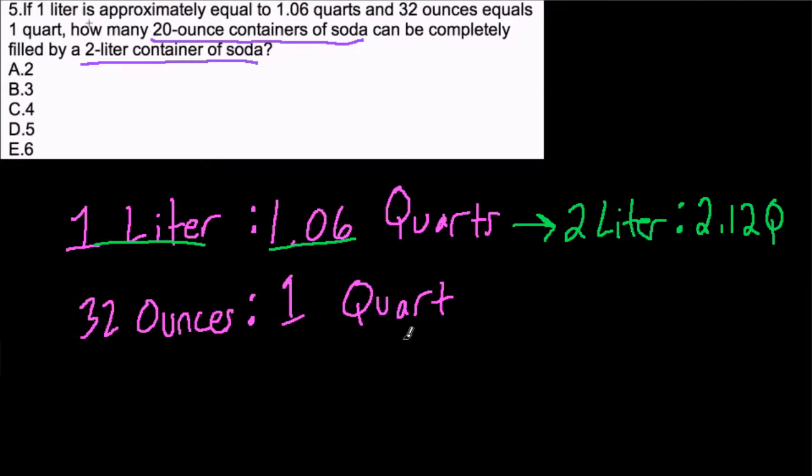And what do we know? Well, every 1 quart has 32 ounces. So what does this mean? We have over 2 quarts. What would 2 quarts be? Well, 2 quarts is double 1 quart, so 2 quarts would hold 64 ounces.